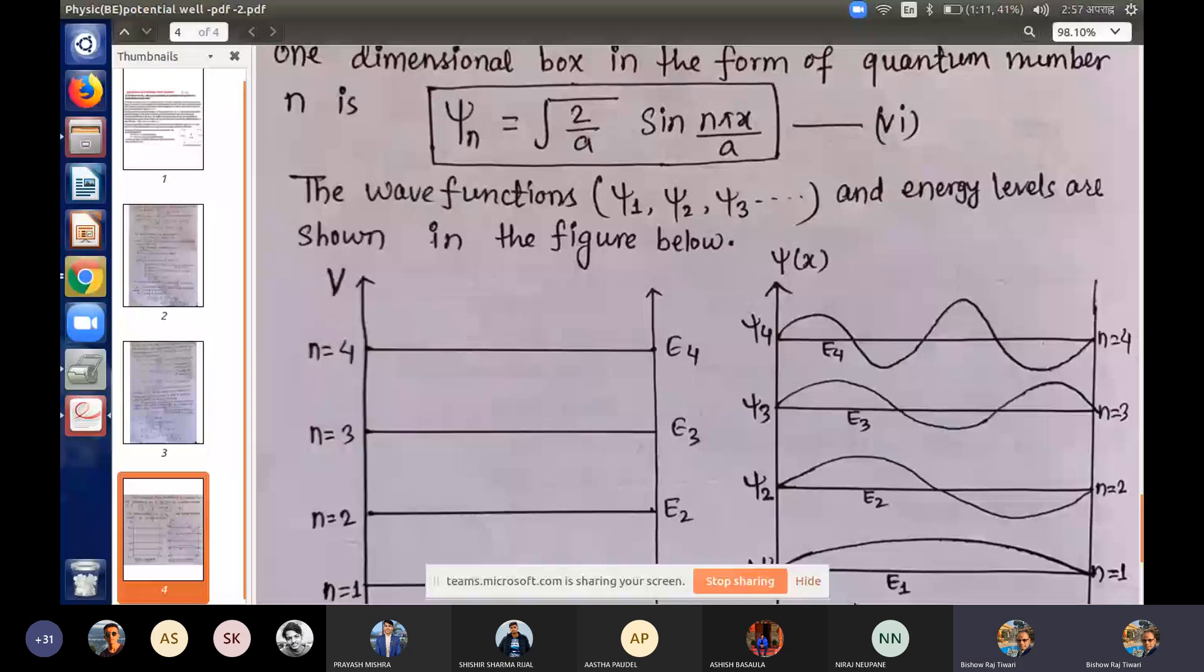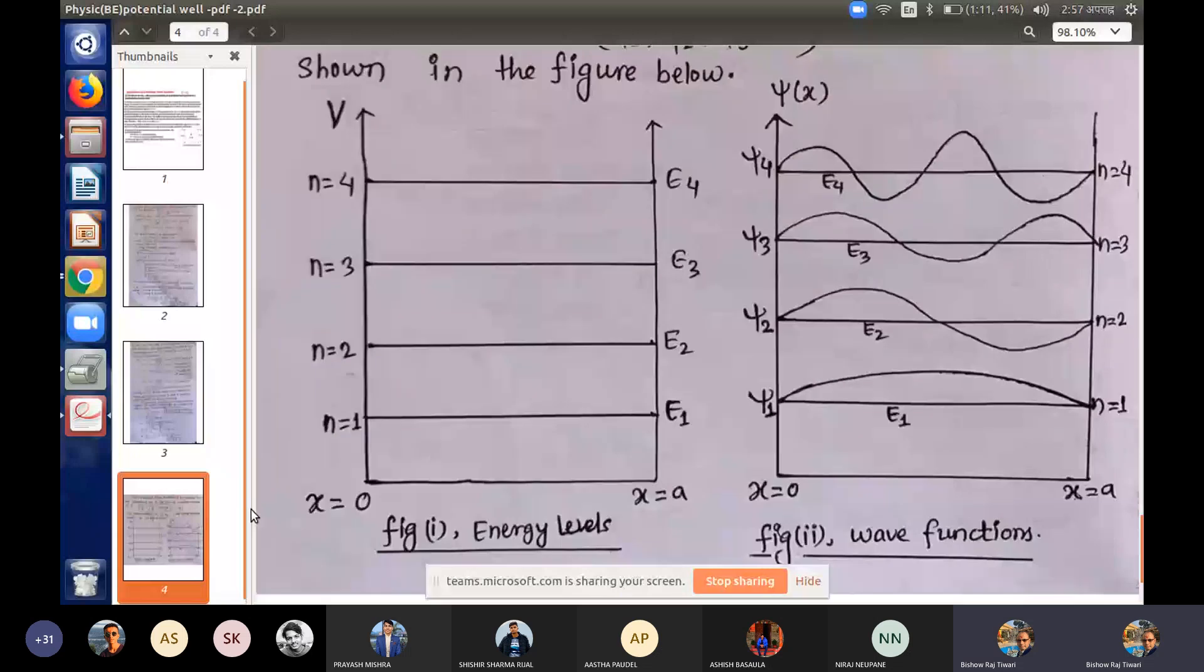E1 is the first energy level, E2, E3, E4. This horizontal line represents the energy level. And for each particular energy level, the wave function: E1 energy level has psi 1, E2 energy level has psi 2, psi 3, psi 4.